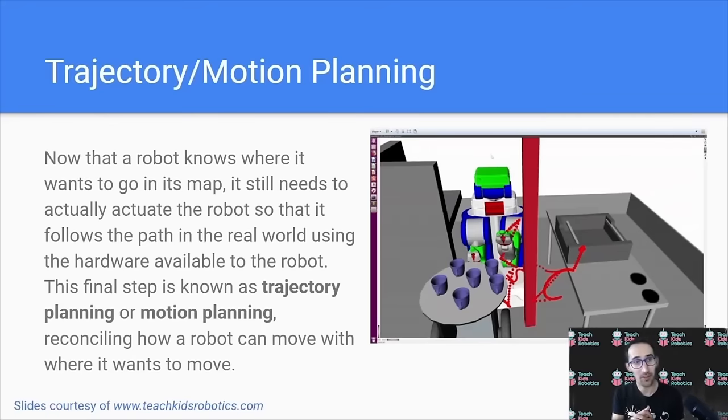The next step, once a robot knows where it is in the map, it's decided it has a start and a goal point, it's found what it considers the best path is from that start to goal point in its map, it actually needs to figure out how it can realize that planned path in the real world using the motors available to it. This final piece is known as trajectory planning, or motion planning, and reconciles how a robot is actually able to move with what the plan was for the robot to move. And this allows us to close the gap between the robot's perception of the world and its movement in the real world.